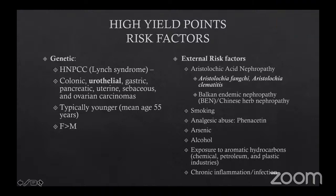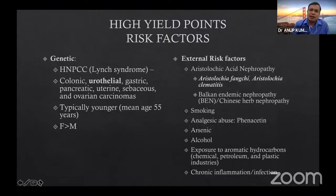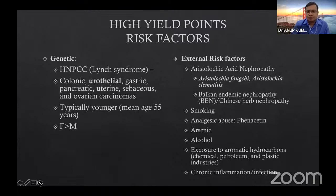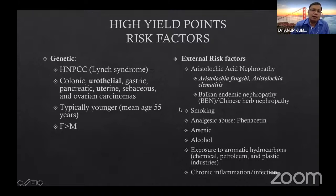External risk factors include aristolochic acid, very commonly seen in Balkan Peninsula countries of southeastern Europe such as Romania and Bulgaria, where the plant's aristolochic acid is considered carcinogenic for upper tract urothelial carcinoma. Smoking is a common risk factor for both upper and lower tract. High-dose phenacetin analgesics, arsenic, alcohol, various chemical exposures, and chronic inflammation are also common to both upper and lower tracts. Remember the role of aristolochic acid specifically.